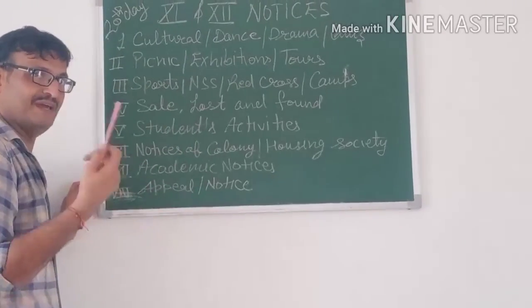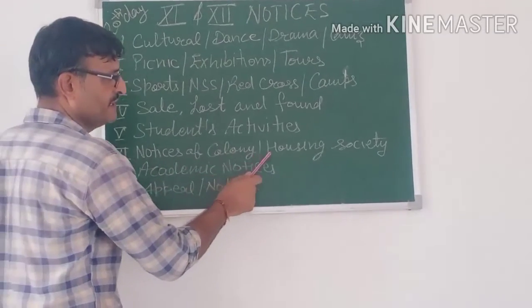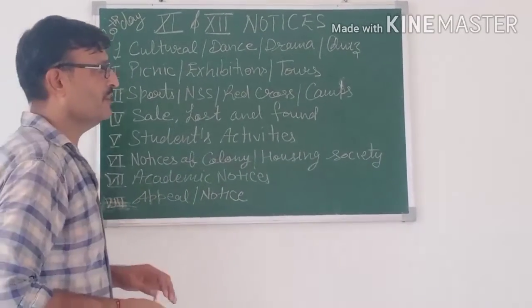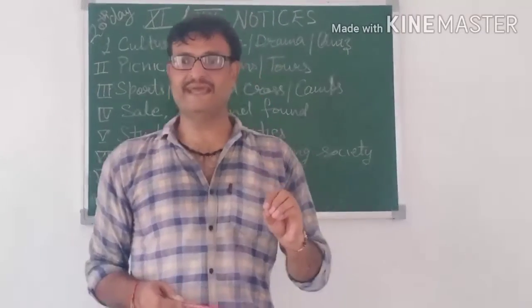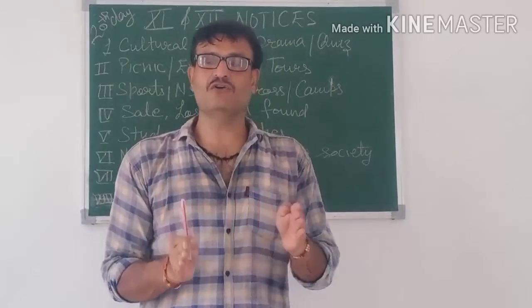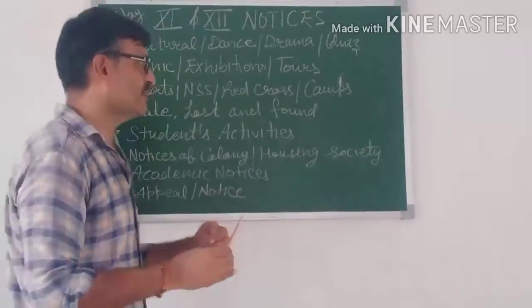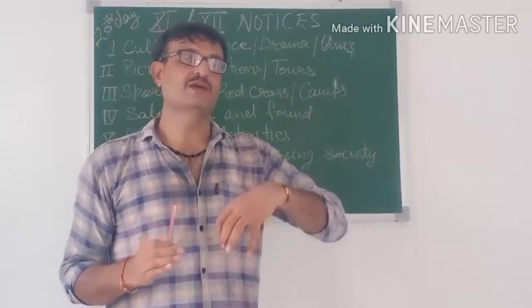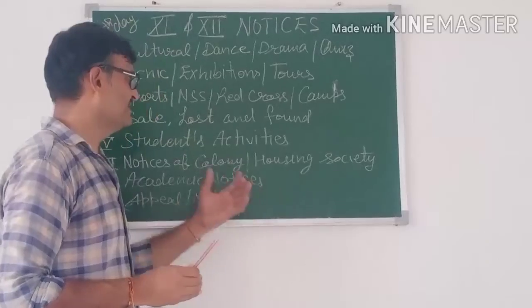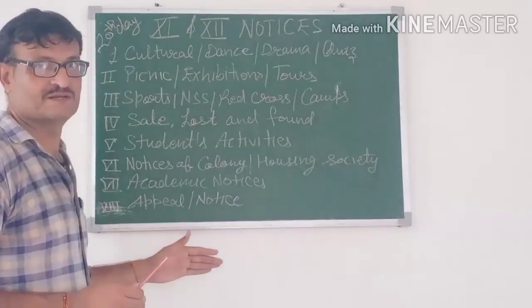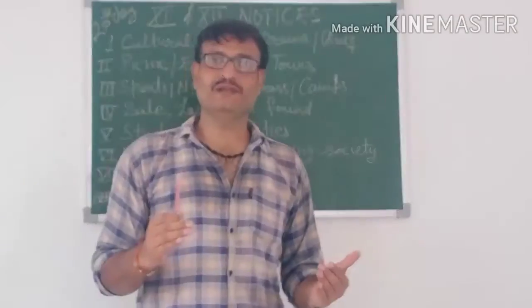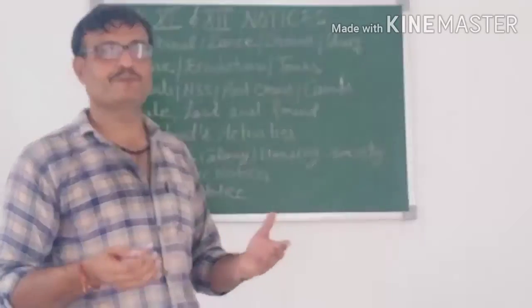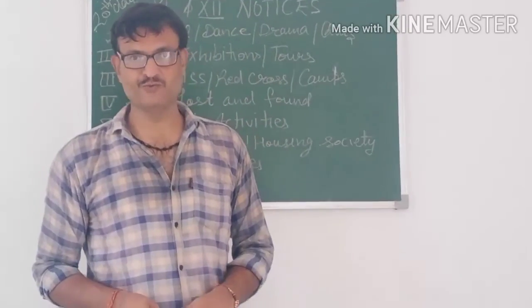Sixth are notices of colonies and housing societies. Seventh are academic notices. Eighth are appearing or public notices. I have already told you about the formation and drafting of notices. You have to prepare all these notices which are presented in different forms. Later I will send you a PDF with a variety of notices for you to prepare. Till then, thank you — you have to prepare all of these.